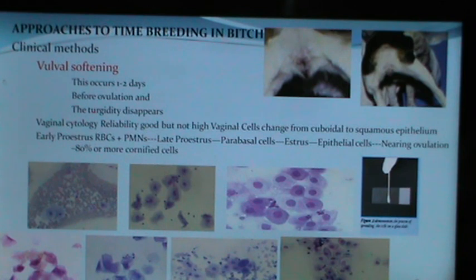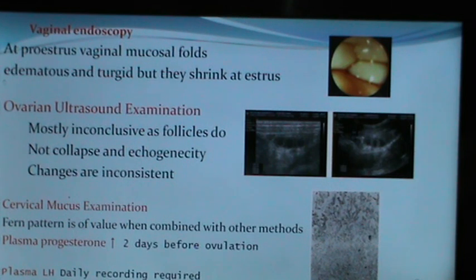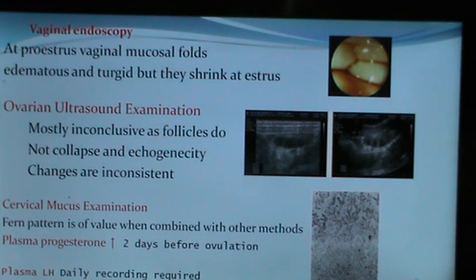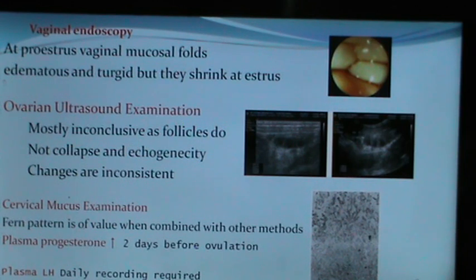After estrus is over, neutrophils are found, while during estrus different cell types appear in the vaginogram. Vaginal endoscopy can give information on breeding timing — at proestrus, vaginal mucosal folds are edematous and turgid, but they shrink at estrus. Ovarian ultrasound examination may be of value with the right probe, but is mostly inconclusive as follicles do not collapse and echogenicity changes are inconsistent over the proestrus and estrus period.